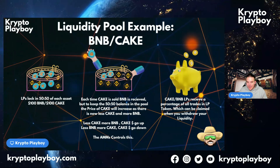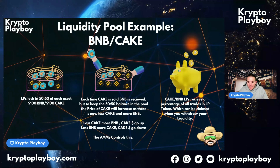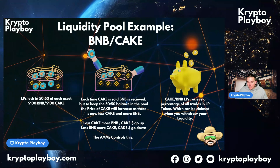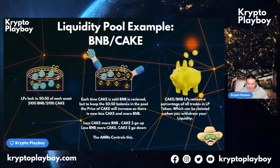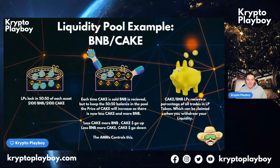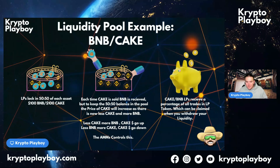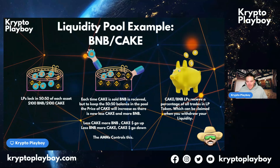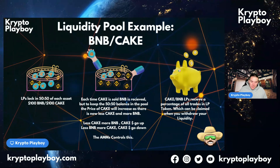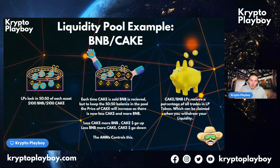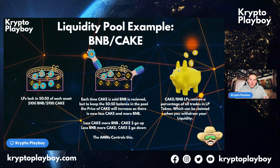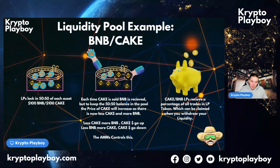Every liquidity pool must be balanced — it's a 50/50 balance of each asset. In this example, put $100 of BNB in and $100 of CAKE in — now it's balanced. Each time CAKE is sold and BNB is received, the pool has to keep that balance. What's going to happen is the price of CAKE is going to go up to balance with the more BNB in the pool.